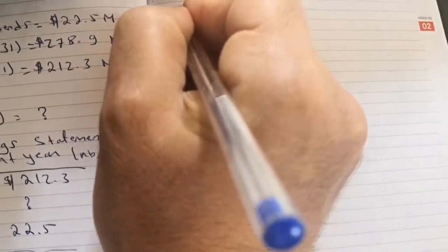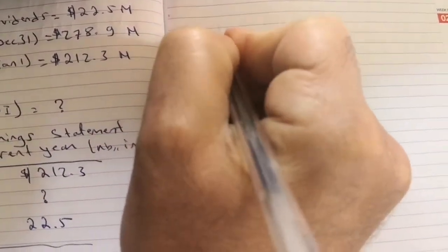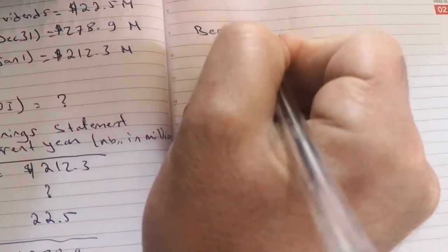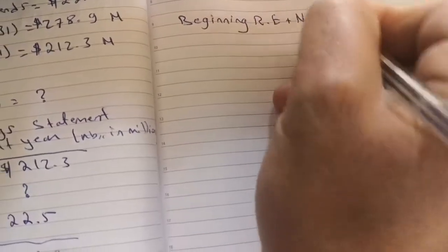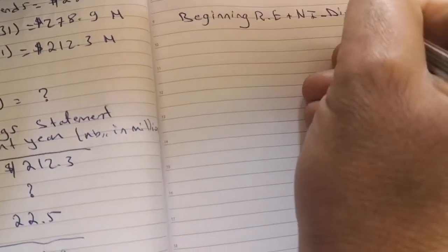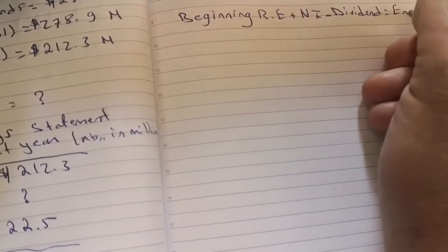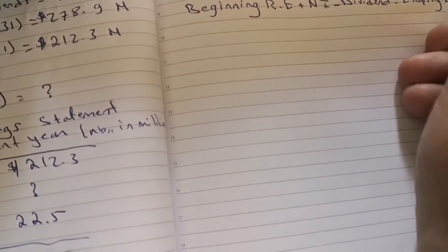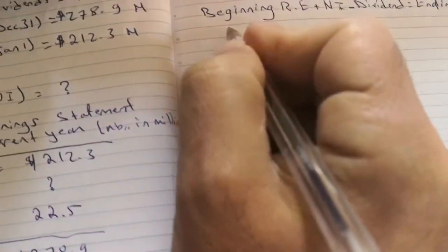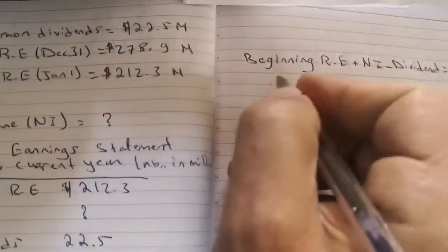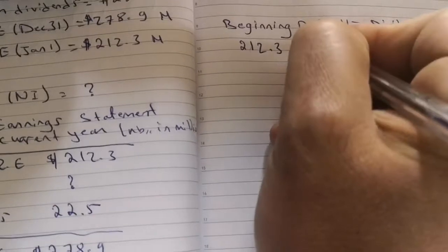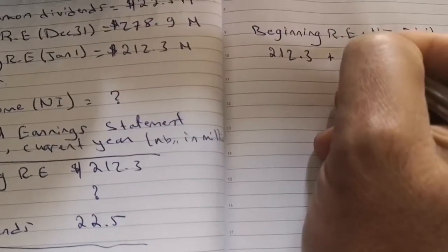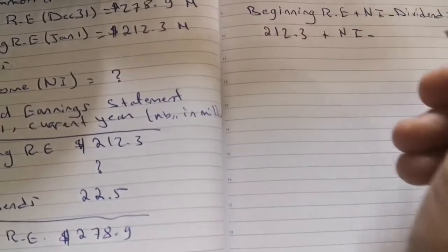So if we write it in an equation form: beginning retained earnings plus net income minus dividend equal ending retained earnings. Now substitute the values: beginning retained earnings $212.3 plus net income missing, minus dividends $22.5, equal ending retained earnings $278.9.